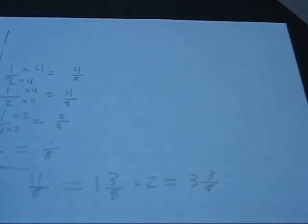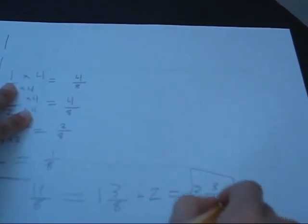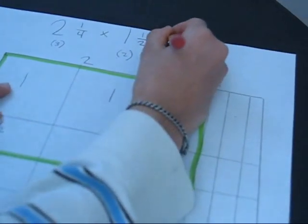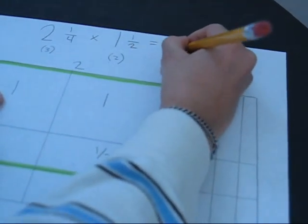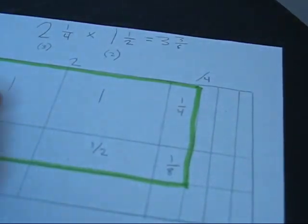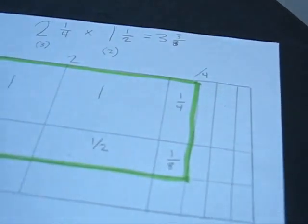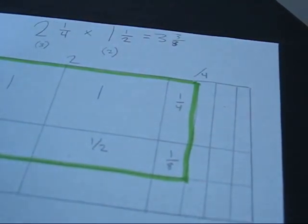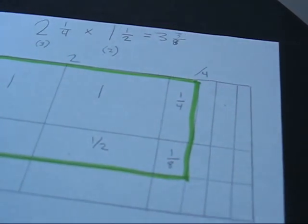Since this cannot be simplified, this is our final answer. So at the front, let's write 3 and 3 eighths. That's so perfect — 3 and 3 eighths. I hope this helped you all, and see you later. Bye!